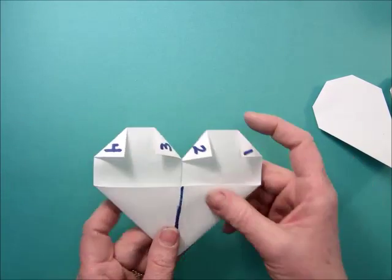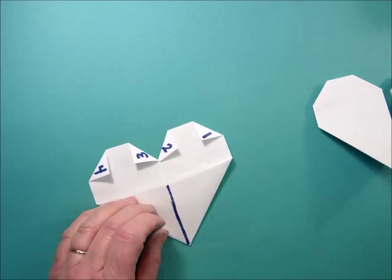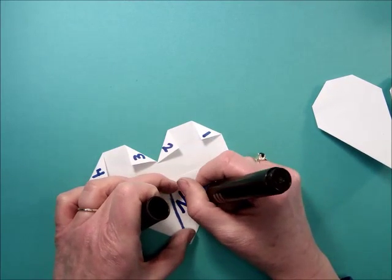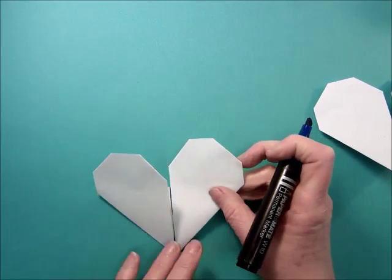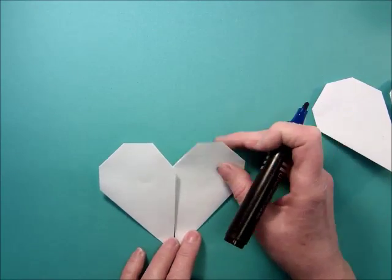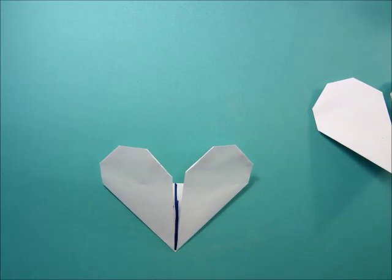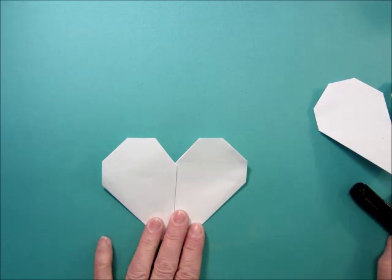But be sure to put your name on the back so that we know whose it is. And you can spend the rest of the time decorating your valentine. Use a marker mat underneath so that you don't get marker on the table. The marker mats are on the counter by the microwave.